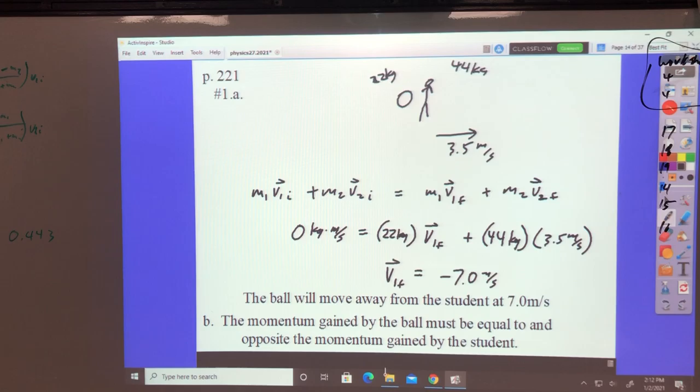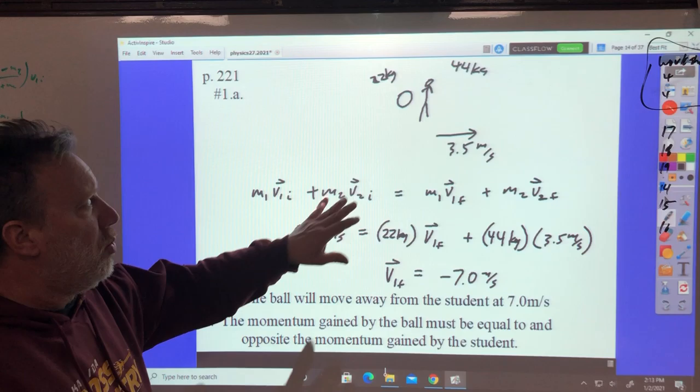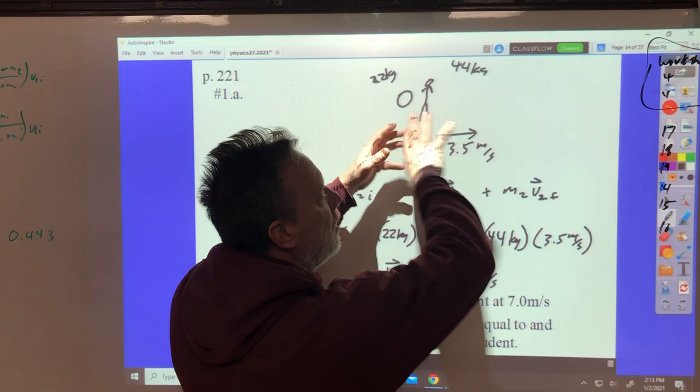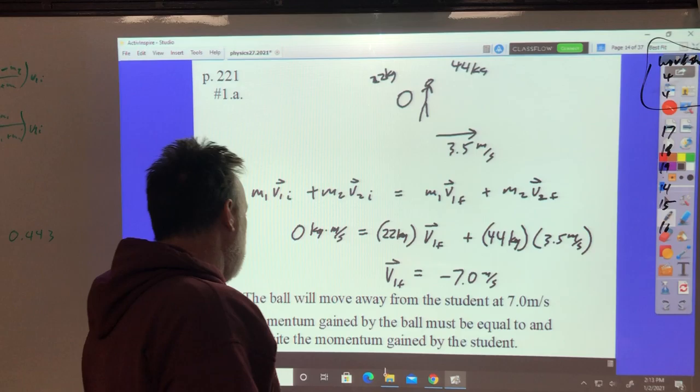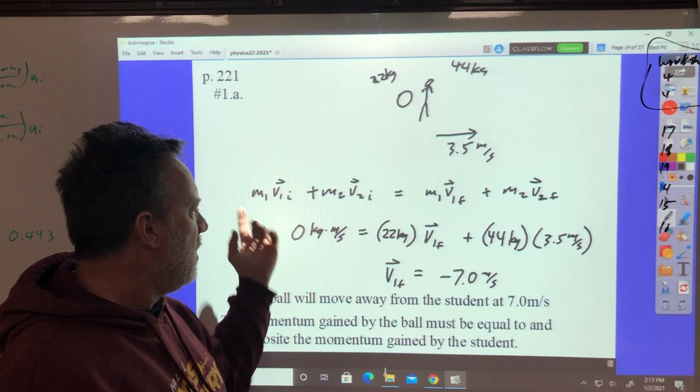B asks, explain what happens to the ball in terms of the momentum of the student and the momentum of the ball. There's a couple ways you could say this. One, their momentum was zero to start with. So the momentum, when they're done, is still zero. Because if this one's positive and that one's negative, they're equal and opposite and still zero. Another way of saying it, the momentum gained by the ball must be equal to and opposite the momentum gained by the student.